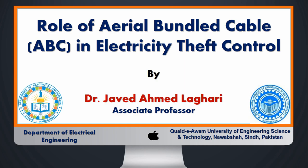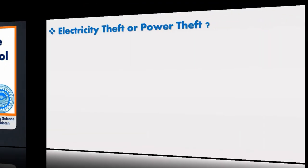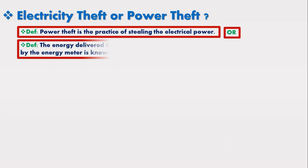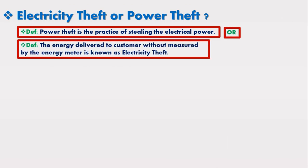I will discuss how K-Electric has controlled its electricity theft by using this cable, and how other distribution companies of Pakistan can reduce their losses by controlling electricity theft using this cable. Electricity theft can be defined as the practice of stealing electrical power, or it may be defined as energy delivered to a customer without being measured by an energy meter.